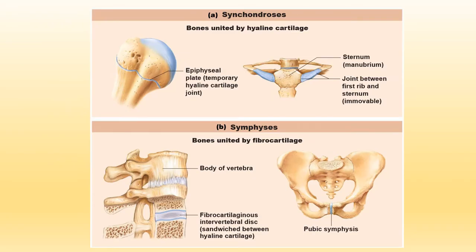To reiterate — synchondrosis and symphysis are both examples of cartilaginous joints. In the top image we see the growth plate or epiphyseal plate in what appears to be the humerus. On the right, the costal cartilage unites rib one to the manubrium. On the bottom, a section of the vertebral column is cut to show the intervertebral disc, and on the right we have the pubic symphysis uniting the left and right pubic bones.